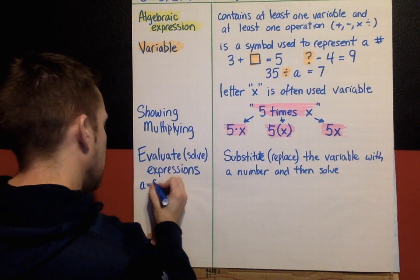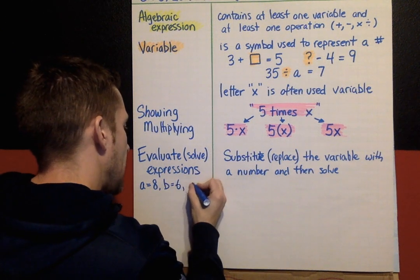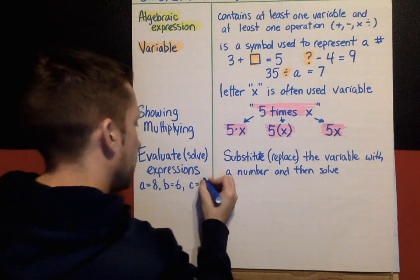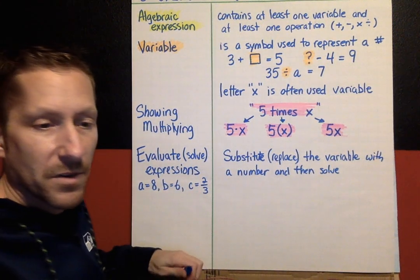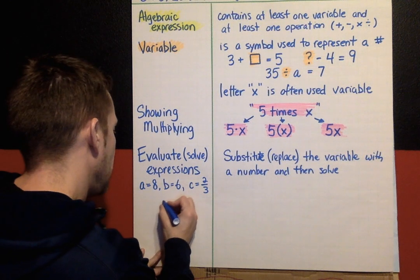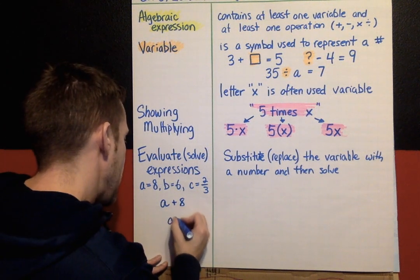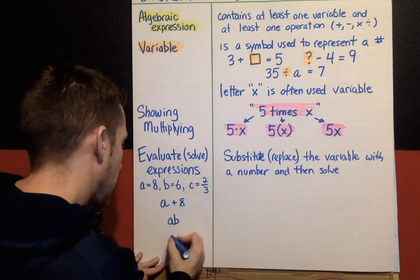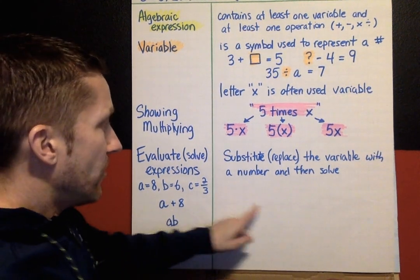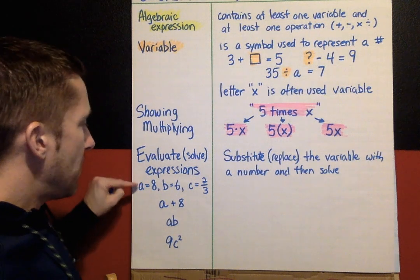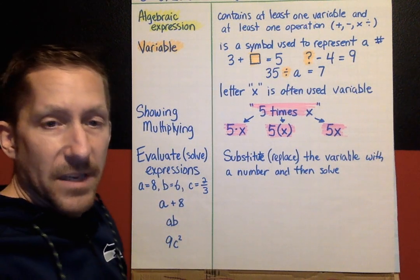Here are some examples of evaluating expressions. We'll say that variable a equals eight, b has the value of six, and c has the value of two-thirds. So a equals eight, b equals six, and c equals two-thirds. Now we are going to solve these three expressions: a plus eight, a times b (written as 'ab'), and 9c squared. I'll solve these by substituting the given numbers in for each variable.